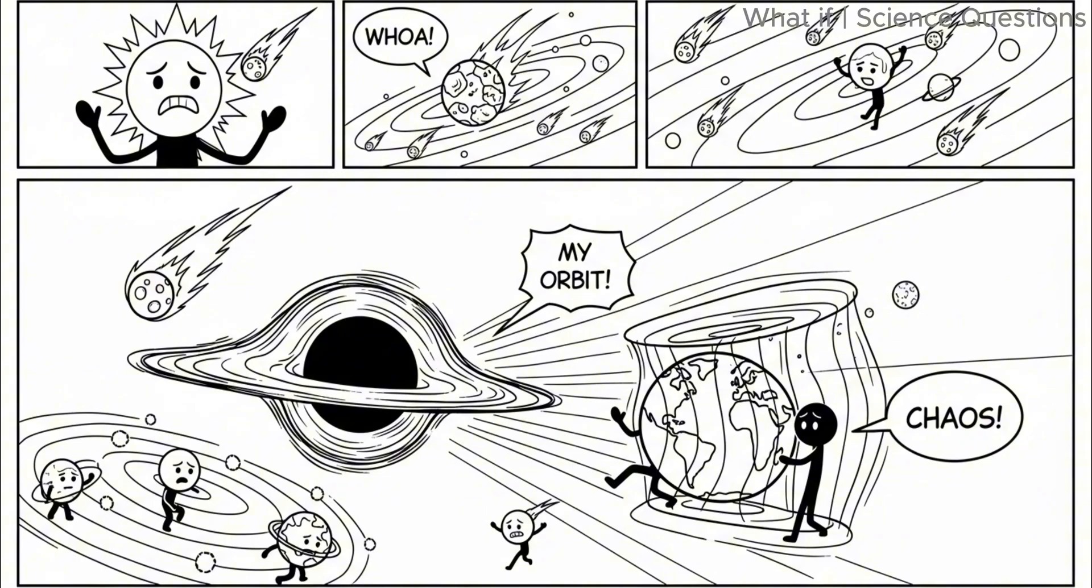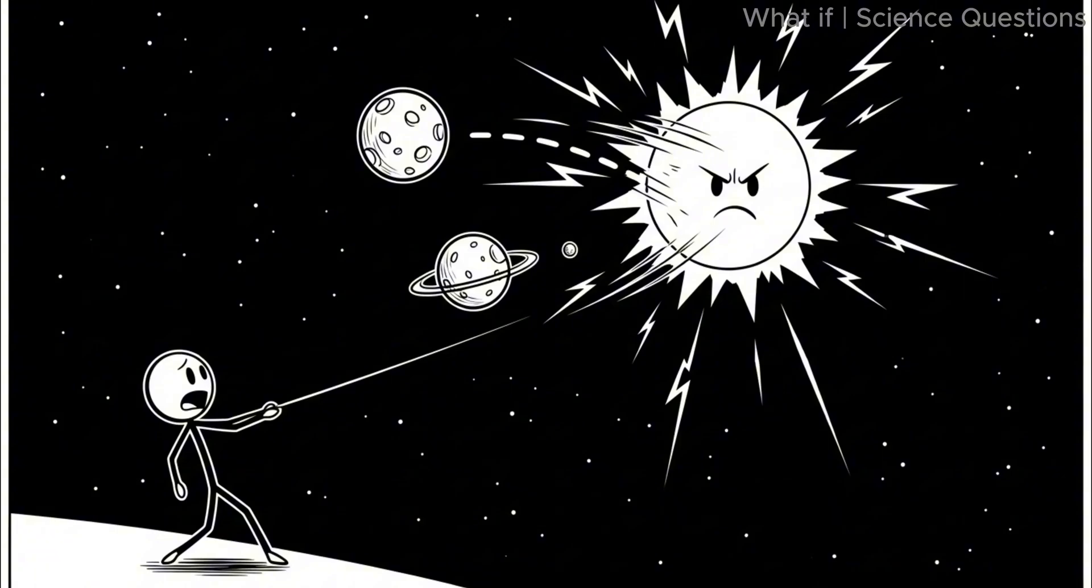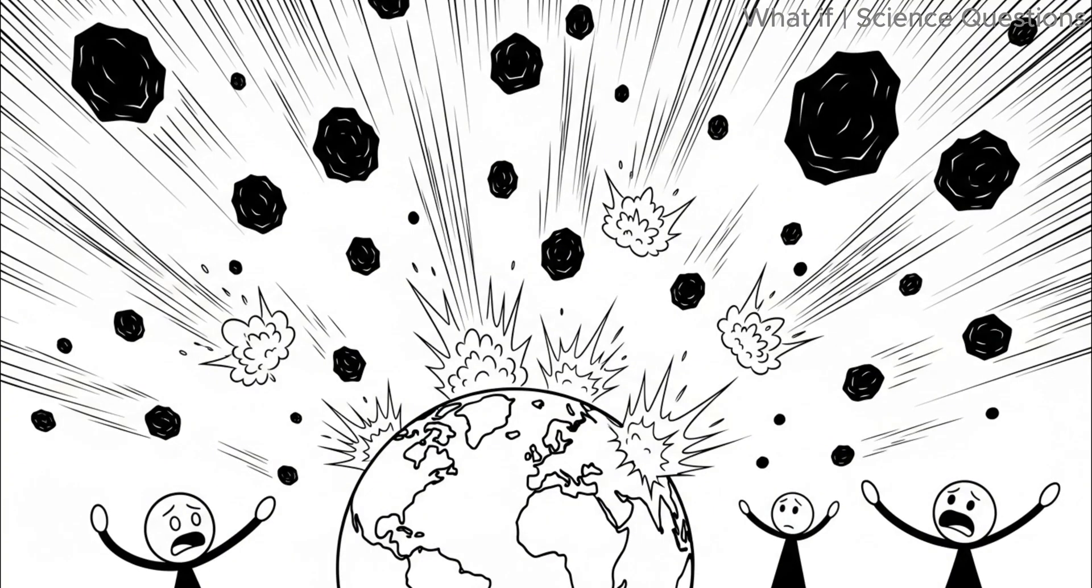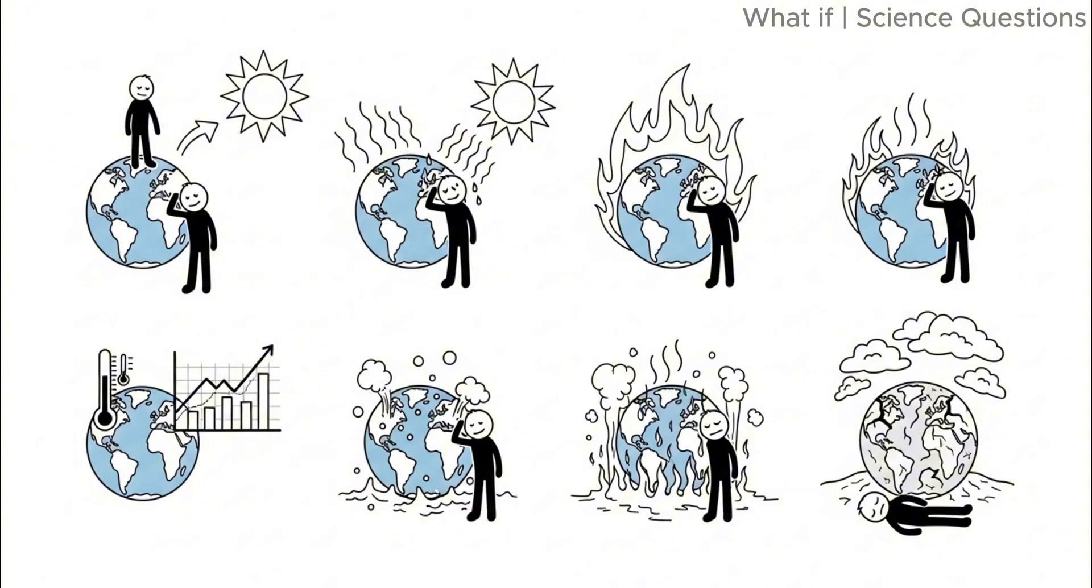If the black hole doesn't hit Earth directly, but passes close, say within a few million kilometers, its gravity would completely destabilize the solar system. Planets could be flung into deep space, ripped away from the sun forever. The sun itself might wobble or shift slightly, disrupting its balance and potentially altering its energy output. Asteroids from the asteroid belt could be hurled toward Earth in massive bombardments. Even without a direct hit, Earth might be pulled into a wildly different orbit.